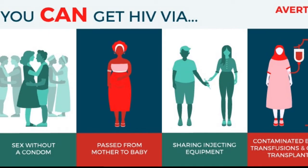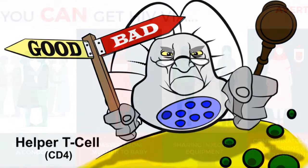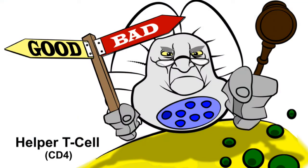This HIV retrovirus enters the human body through unprotected sex with an HIV positive person, contaminated needles, etc. Once it enters the body, it specifically targets T-helper cells, which are involved in maintaining our immune system and fighting against bacterial and fungal infections.